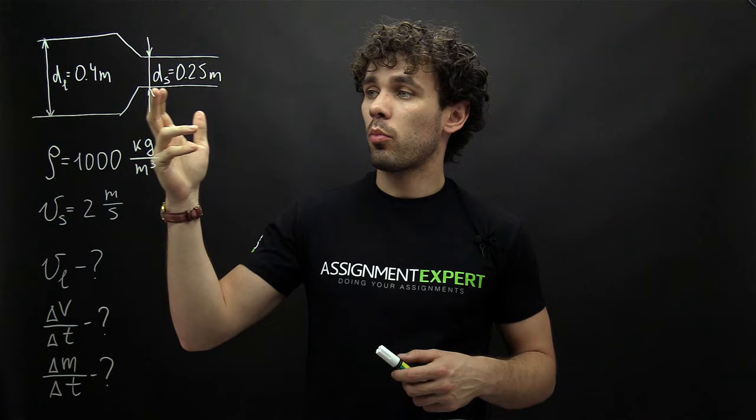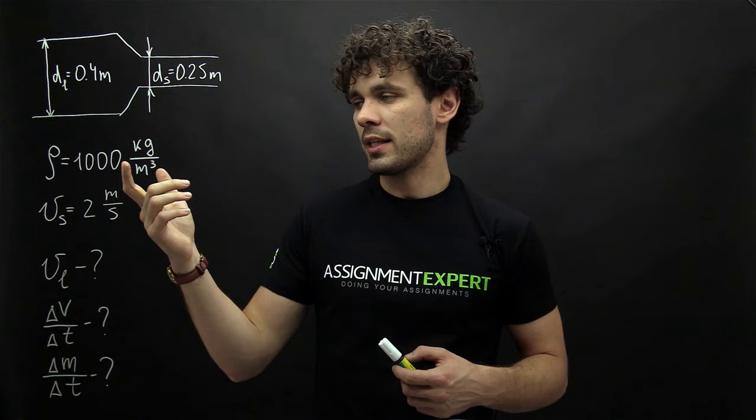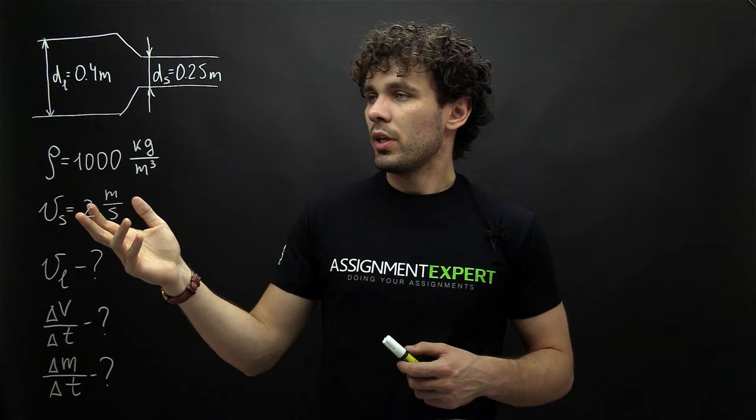Hi guys! This is Simon Expert and this is our today's problem. We have a pipe with a gradually tapering section and the diameter decreases from 0.4 to 0.25 meters. Inside the pipe there is an incompressible liquid with density 1000 kilograms per meter cubed, and the pipe runs full of this liquid.